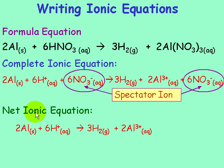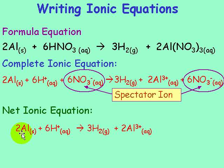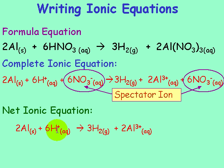Don't forget, you can always check for the number of atoms to see if they are conserved, and also for charges. For example, in the net ionic equation we have 2 aluminums on the left and 2 aluminums on the right, and 6 H's on the left and 3 times 2 is 6 H's on the right. The total charge on the left is 0 plus 6, and on the right, 0 plus 3 times 2 is plus 6.